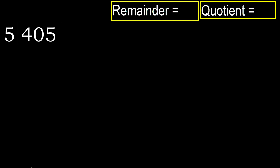405 divided by 5. 4 is less, therefore next. 40 is not less, therefore with 40.